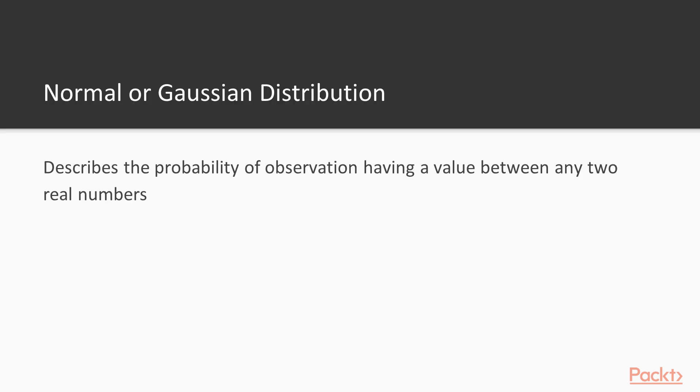Ordinary linear regression assumes that the response variable is normally distributed. Normal distribution, or Gaussian distribution, is a function that describes the probability that an observation will have a value between any two real numbers.